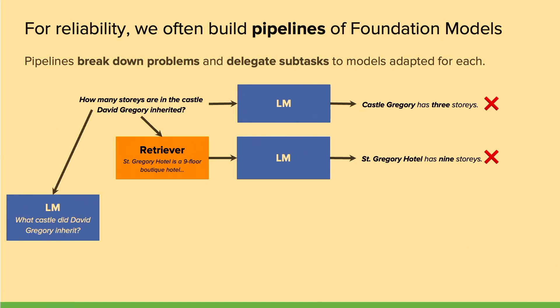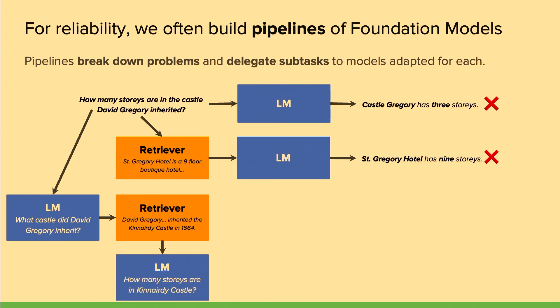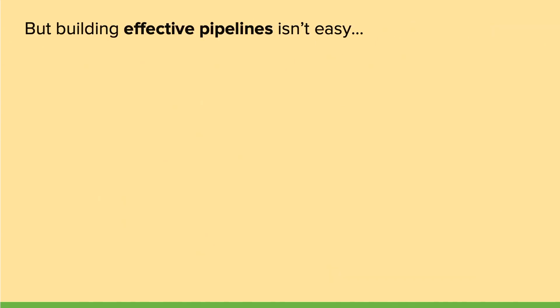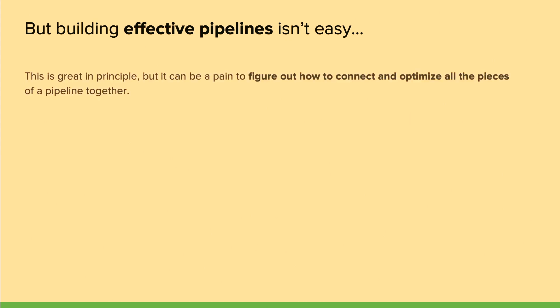The more sophisticated pipeline approach asks a language model to generate a sub-question — 'what castle did David Gregory inherit?' — does a lookup with that sub-question, finds a relevant passage, generates another sub-question, and repeats until converging on the correct answer of five stories. However, building effective pipelines isn't easy in practice. Every change to a sub-task requires additional pipeline-specific training data and significant engineering effort to re-architect the pipeline.